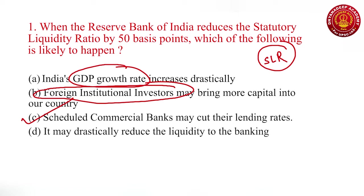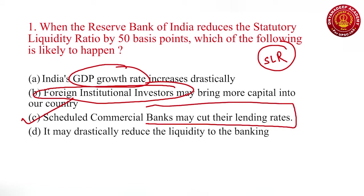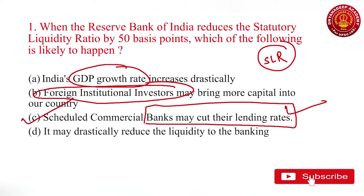What is the meaning of liquid assets? Those assets which can be easily converted into cash are called liquid assets. So when SLR is reduced, banks will have more money in hand to spend into the market. Ultimately, banks may cut their lending rate — they have more money so they can lend more. Every bank will lend more, and when there are more lenders compared to borrowers, they will reduce their interest rates. So scheduled commercial banks may reduce their interest rate.